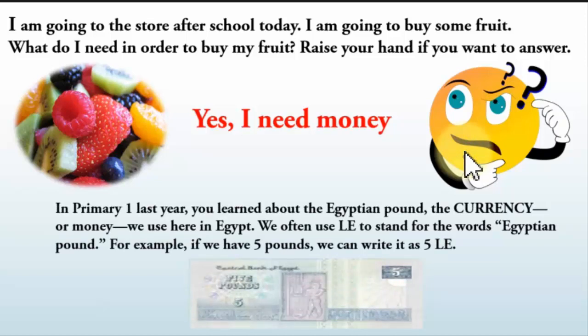In Primary One last year, you learned about the Egyptian pound — the currency or money we use here in Egypt. We often use 'pound' to stand for the word Egyptian pound. We express Egyptian pound as 'LE'. For example, if we want to write five pounds we write it as 5 LE. In math class we use two capital letters: L and E.